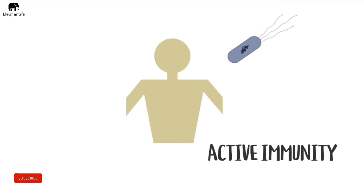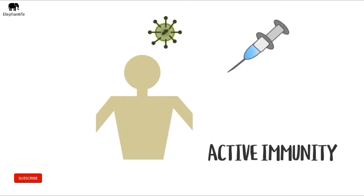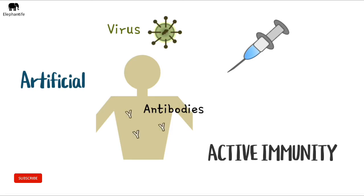When our immune system develops its own antibodies, we gain active immunity. It can come from exposure to an infection or from getting a vaccine. When we come in contact with a pathogen, our immune system generates antibodies to resist the infection — this is natural active immunity. During vaccination, an inactive virus or some part of it is introduced to our body, and our immune system automatically generates antibodies against it — this is artificial active immunity.